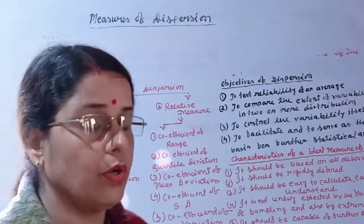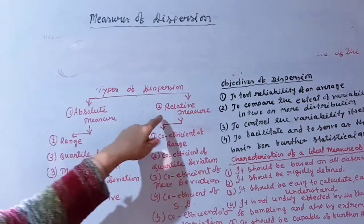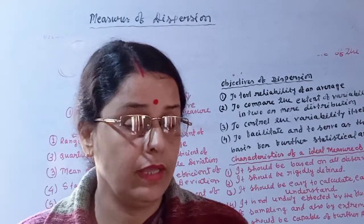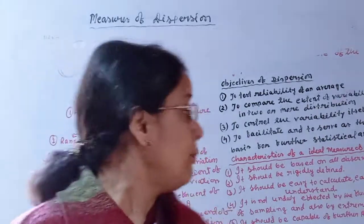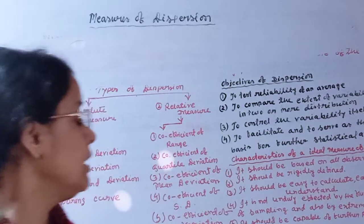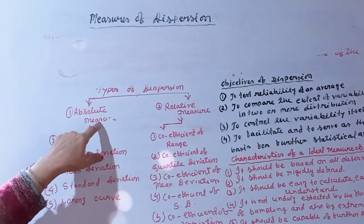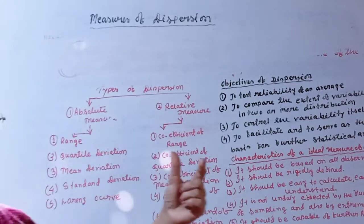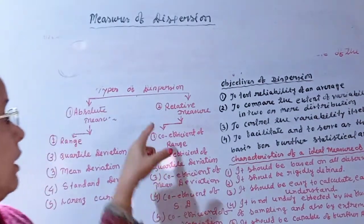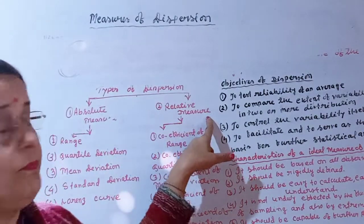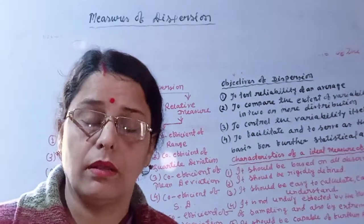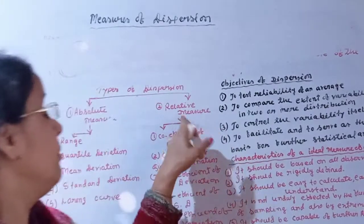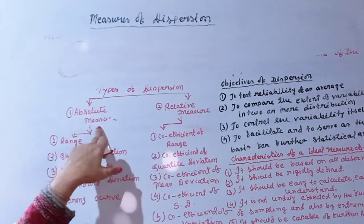The types of dispersion are absolute measures and relative measures. Absolute measures are expressed in terms of the original units. Relative measures are expressed as a percentage or ratio of the average.